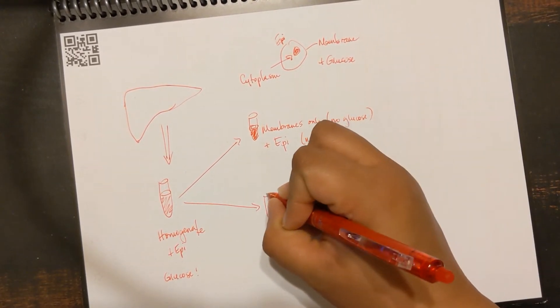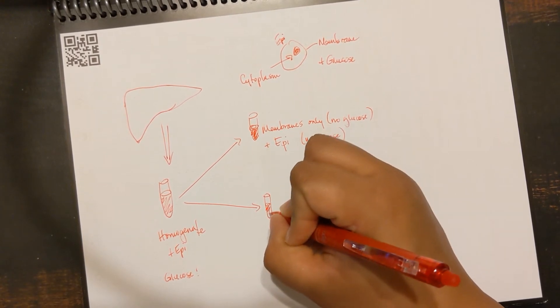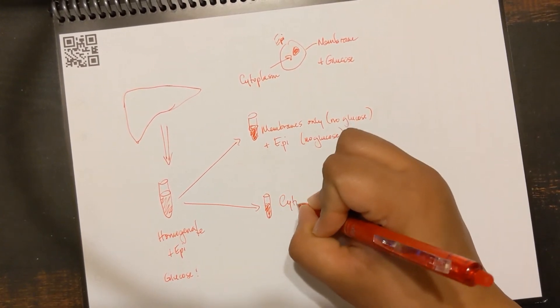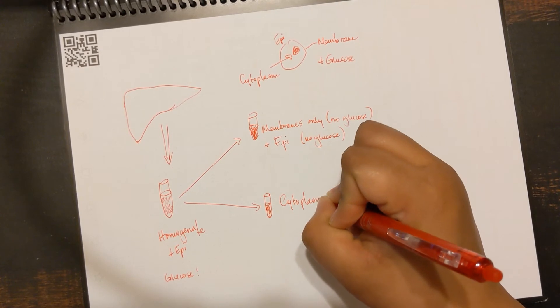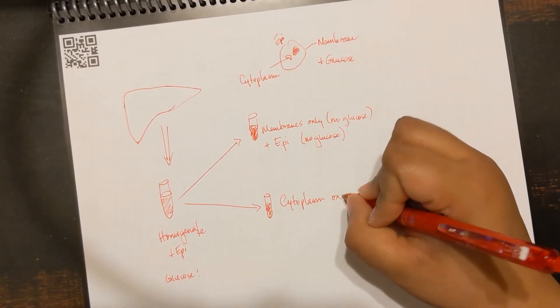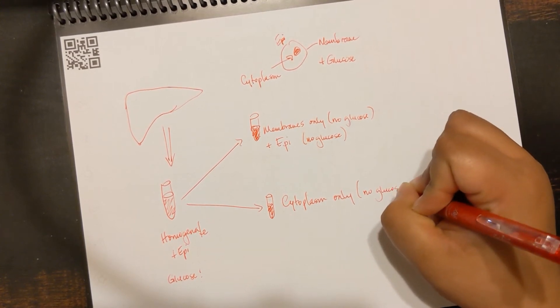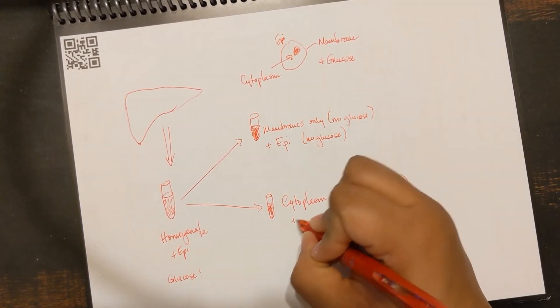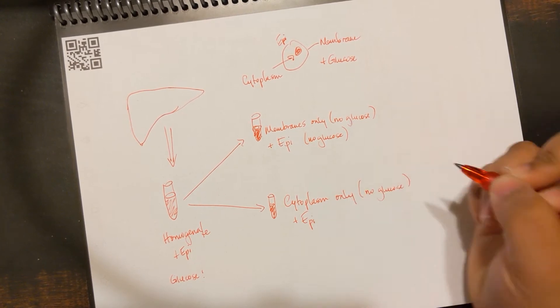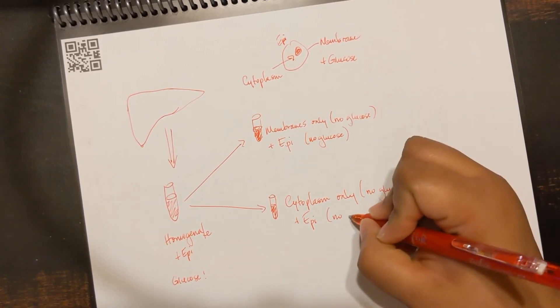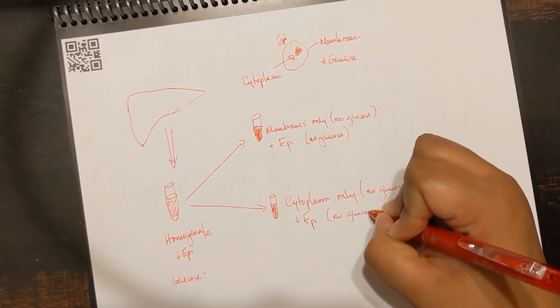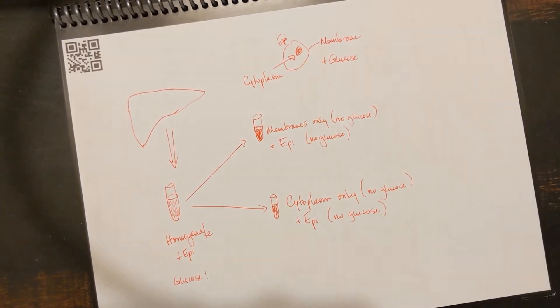Then he looked at the rest of this fraction, the cytoplasm. What happens when I add cytoplasm only? No glucose forms. What about when I add epinephrine? No glucose forms.